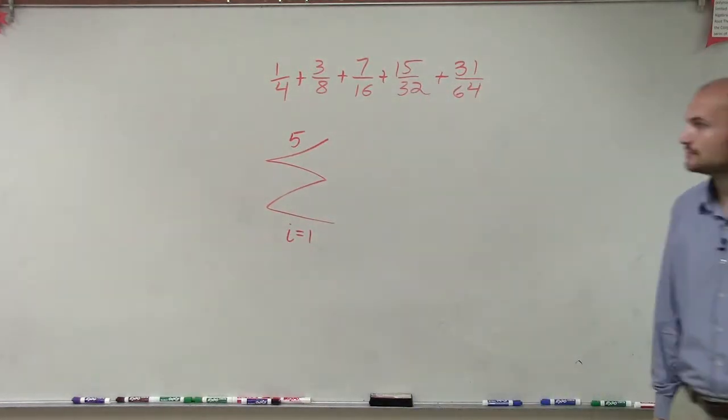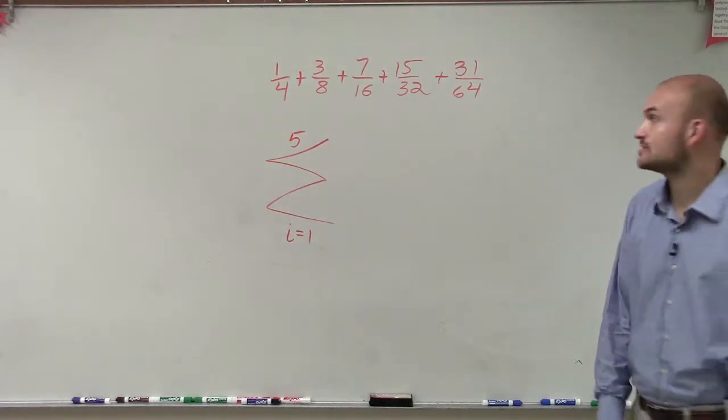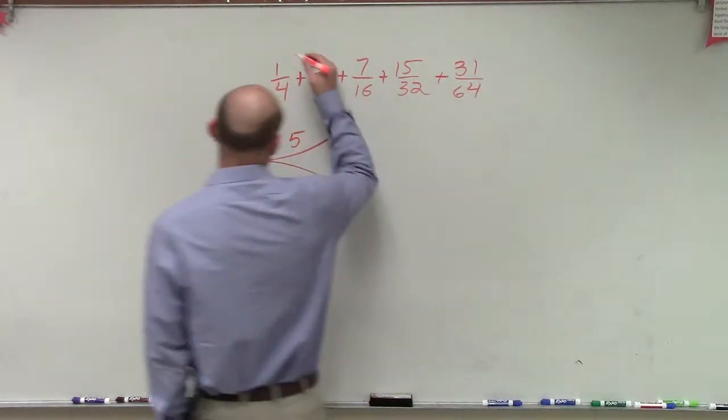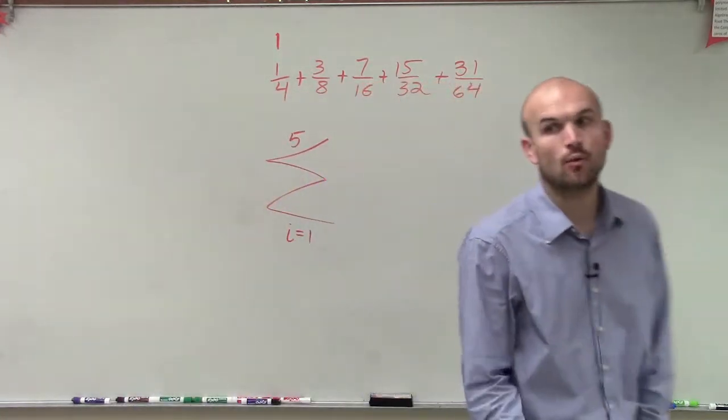All right, now, so we have sigma i equals 1 to 5. Now what I need to do is determine when I plug in a 1 into a rule, how am I going to get 1 fourth?